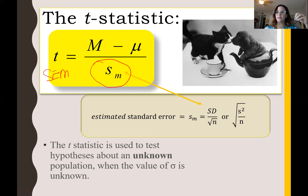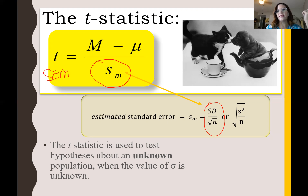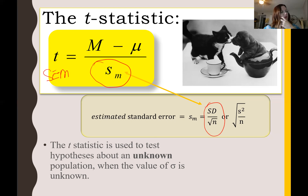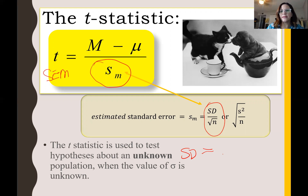Now we're using all of our sample information to estimate things. In our T obtained test statistic for T tests, we have the sample standard deviation divided by the square root of the sample size, where before we had the population standard deviation or variance. Remember, standard deviation is basically the square root of variance. That's why we say variance or standard deviation — if you have the variance, you can get the standard deviation.